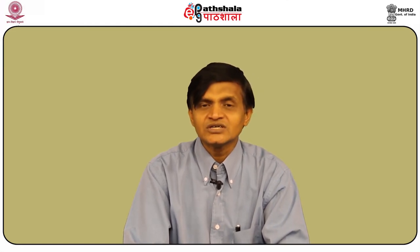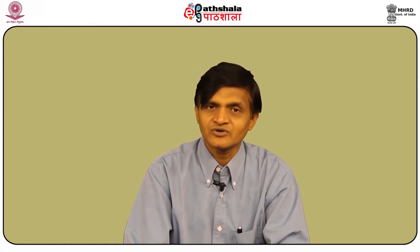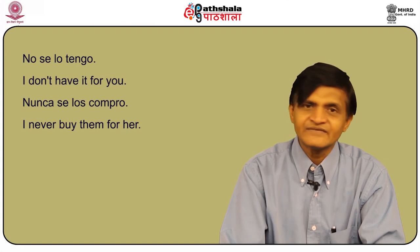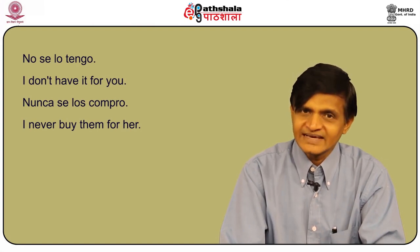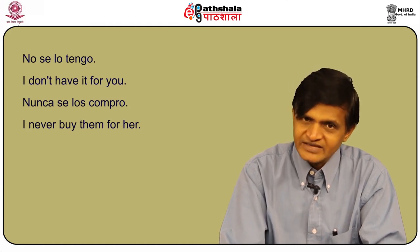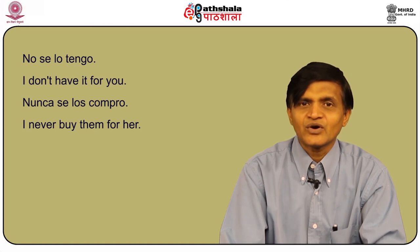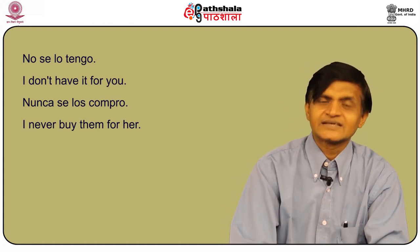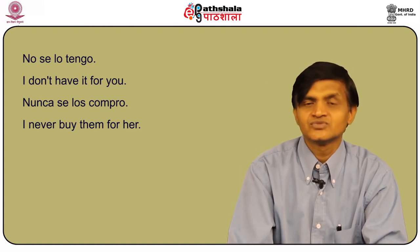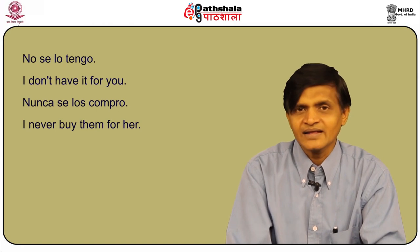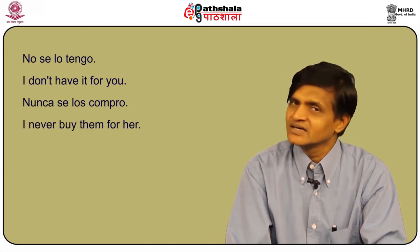In negative sentences, the negative word comes directly before the first pronoun. For example: No se lo tengo — I don't have it for you. Nunca se los compro — I never buy it for them. Because 'se' can have so many meanings, it is always helpful to clarify it using a prepositional phrase: El se lo dice — he tells it to whom? El se lo dice a Juan — he tells it to Juan. El se lo dice a María — he tells it to María.